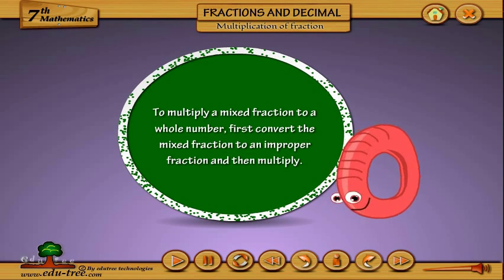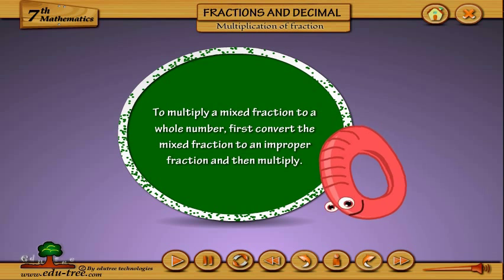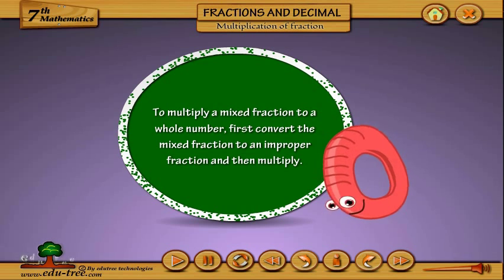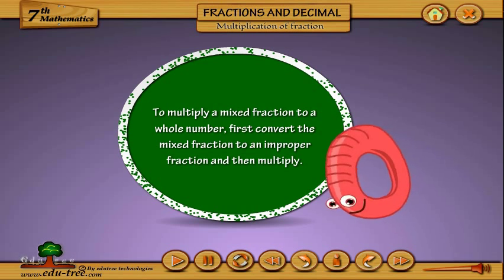To multiply a mixed fraction with a whole number, first convert the mixed fraction to an improper fraction, and then multiply.